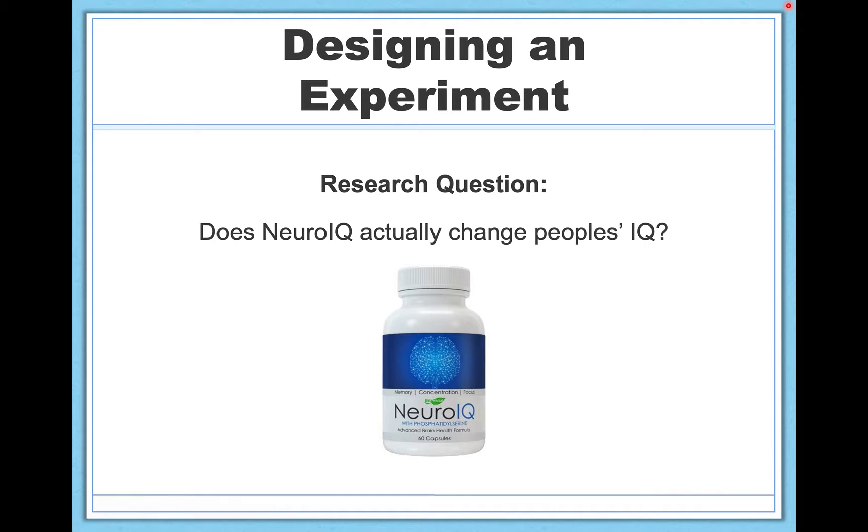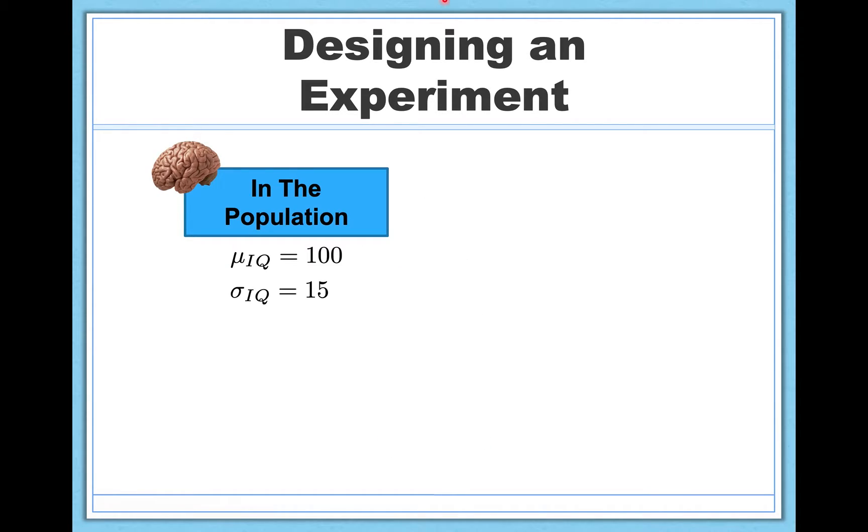So I'm going to design a study to test this question, and this is the study we're going to roll with as our example throughout the next three videos in addition to this one. In the population, we know that IQ scores are normally distributed with a population mean of 100, that's average, and a standard deviation of 15.